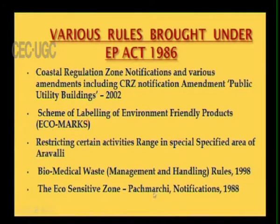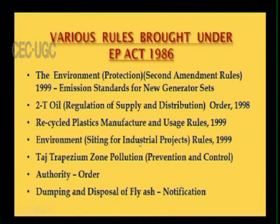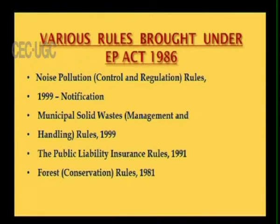Other rules include the eco-sensitive Doon notification in the year 1998, the Environmental Protection Second Amendment Rules, 2T Oil Regulation Supply and Distribution Order 1998, recycled plastic manufacture and usage rules 1999, environmental siting for industrial projects rules 1999, Taj Trapezium Zone Prevention and Control Authority Order, and the notification for dumping and disposal of fly ash. After coal is burnt for the production of electricity, what is left over is fly ash. The disposal of fly ash is a major problem. The Government of India brought a special rule requiring fly ash to be mixed with cement and used for construction purposes.